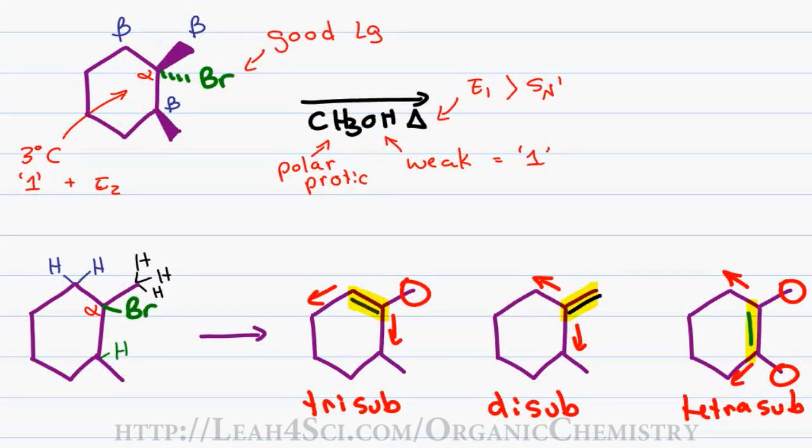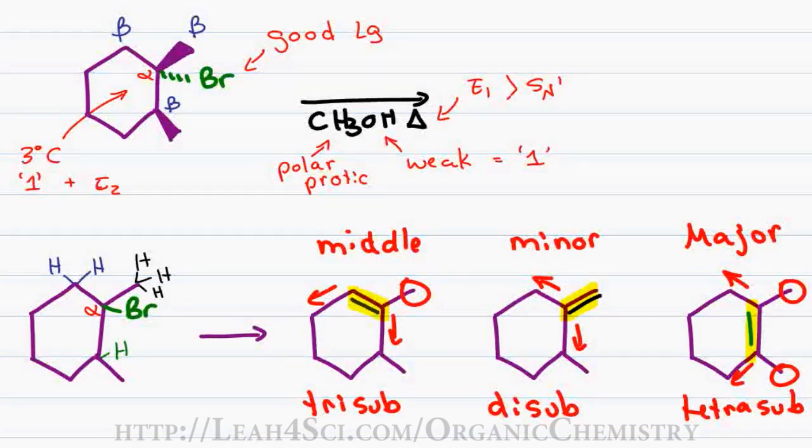Following Zaitsev's rule, we know that the tetra-substituted is going to be the most stable and that's going to be my major product. The tri-substituted is the second most stable, so we'll call it the middle. And the di-substituted is the least stable, so we can call that our minor product. If your professor simply asks for one answer, give the major product. If your professor asks you to draw all products, draw all three and then label them major, middle and minor to show that you understand that even though all three form, there's still going to be a difference based on stability and based on following Zaitsev's rule.